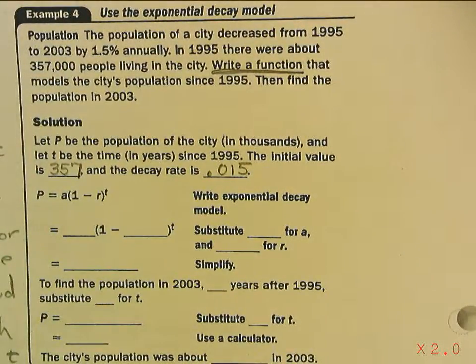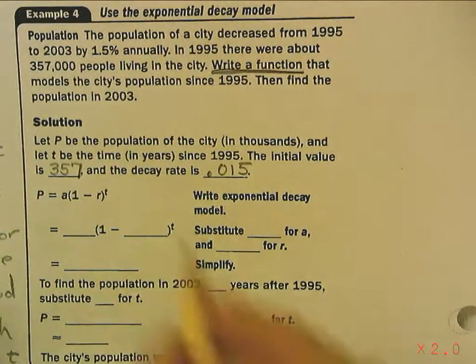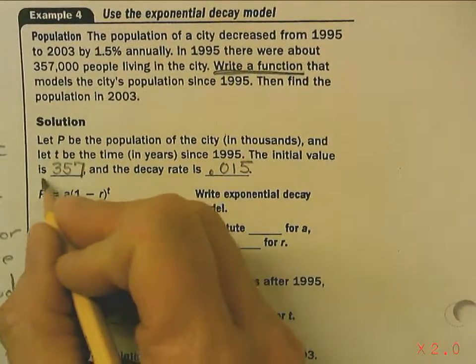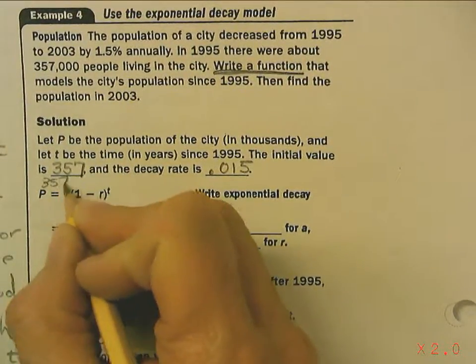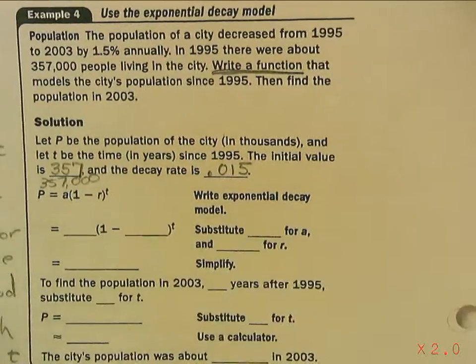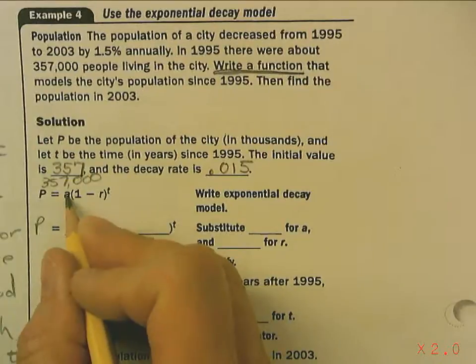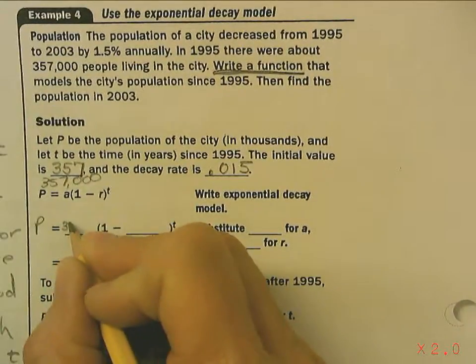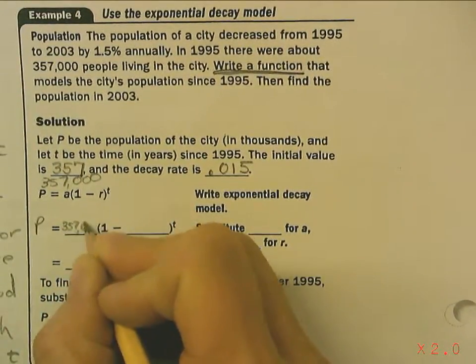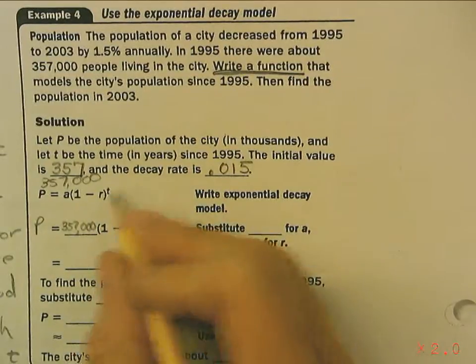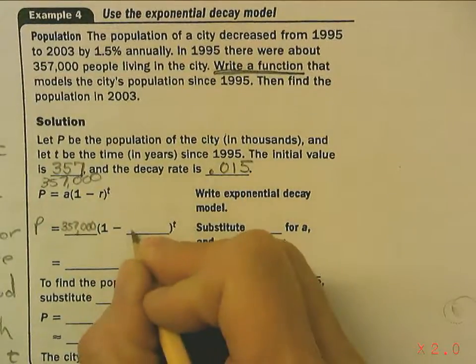Now, they're saying in thousands, so I'm going to make this 357,000. So, I'm going to plug in my unknowns. We're trying to find out the population. A is the initial amount, so A would be 357,000. R is the decay rate, which is .015.